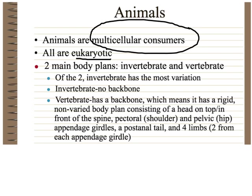Animals have two body plans: the invertebrate body plan and the vertebrate body plan. The invertebrate body plan includes anything that does not have a backbone, which means there's no set body plan for an invertebrate. It can be anything from sea sponges to jellyfish to sand dollars to insects to earthworms — there's all different kinds of invertebrates, so there's no definite invertebrate body plan.